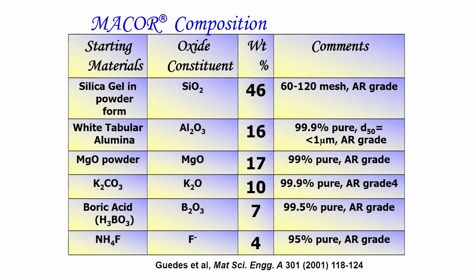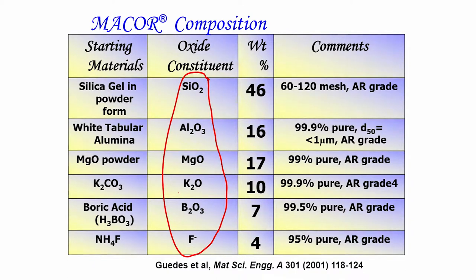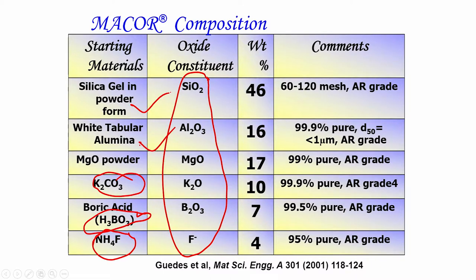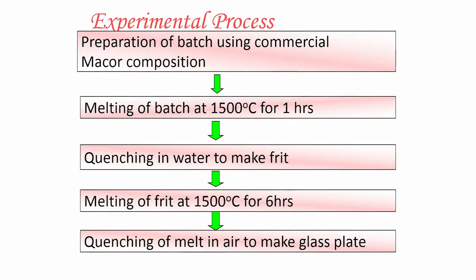In order to develop dental restorative materials, particularly crown materials, I will now show results from developing mica-based glass ceramics — that is, machinable glass ceramics. The typical composition is silica-based oxide glasses with alumina, magnesium oxide, K₂O, B₂O₃, and fluorine. NH₄F is used as a precursor for fluorine, H₃BO₃ for B₂O₃, K₂CO₃ for K₂O, white tabular alumina, and silica gel in powder form.